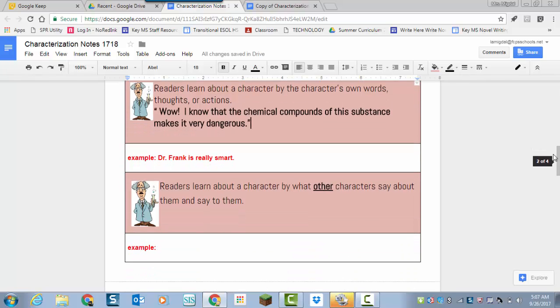And then the third way an author tells us about a character is by what other characters say about him. So if someone walked by and said, Wow, he is so smart. That's kind of direct, but it's not the author saying it. It's another character saying it. And of course, we know then Dr. Frank is really smart.